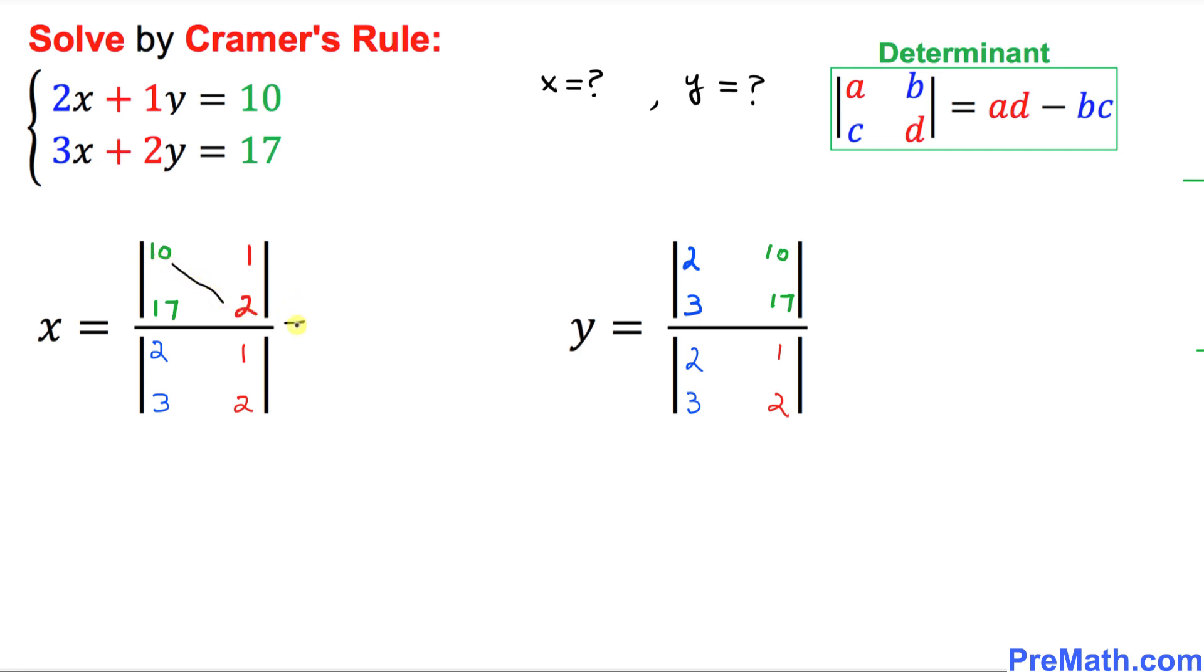10 times 2 is going to be 20 on the top. And then I want you to just put down minus sign before we do anything else. So then I am going to multiply 17 times 1 is 17. And same thing, we're going to apply this one over here. 2 times 2 is 4. And then I'm going to put a minus sign. Make sure I'm using a different color. And then finally, 3 times 1 is 3. Let's simplify this one. This is going to give us 20 minus 17 is 3 divided by 1. That means x turns out to be simply 3 values because this is equal to 3.